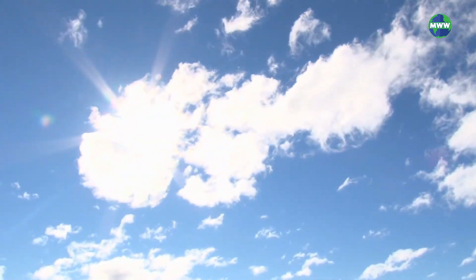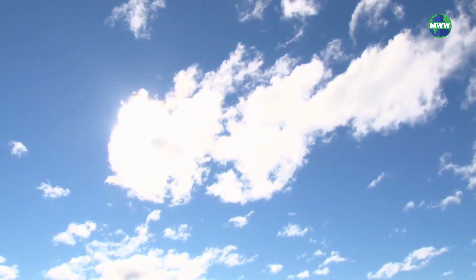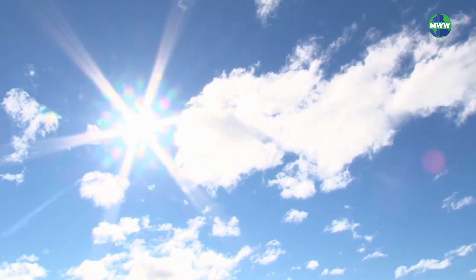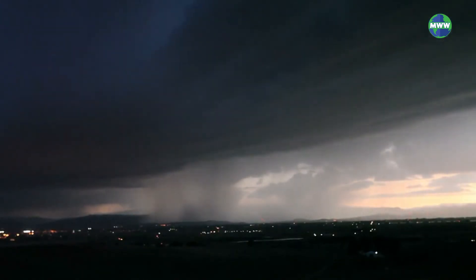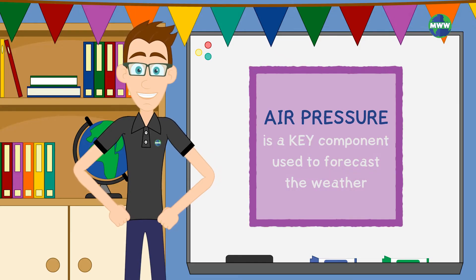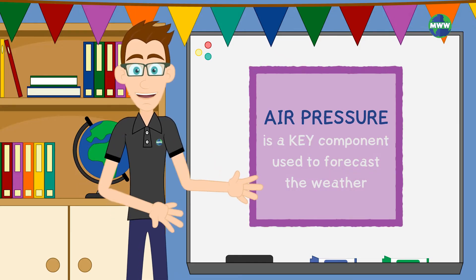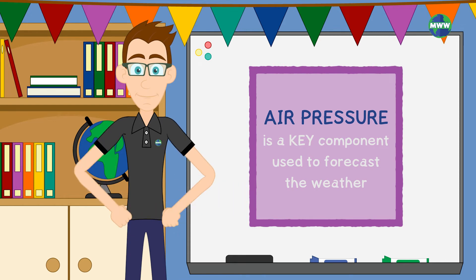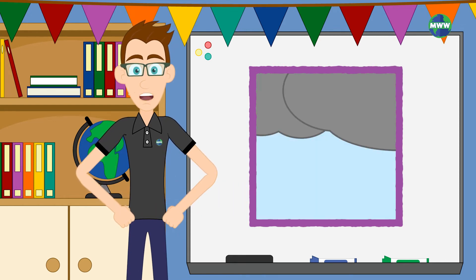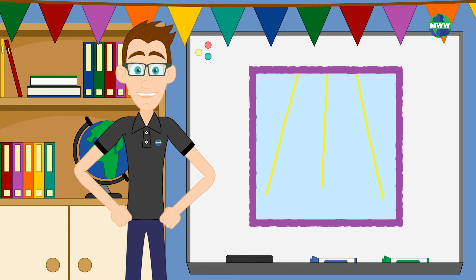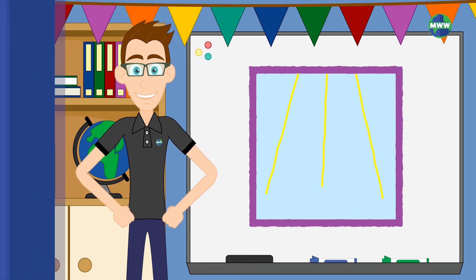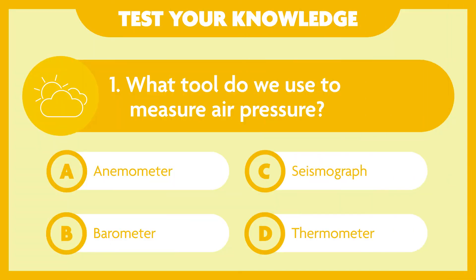In general, when there is an area of high pressure, the weather is usually clear or fair. On the other hand, an area of low pressure typically brings cloudy or rainy weather. Air pressure is a key component meteorologists use to forecast the weather. When there are drastic changes in air pressure, meteorologists know that a change in weather is coming soon.